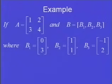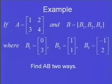I tried to come up with a good example for this. If A is the matrix 1, 2, 3, 4, and B is in order B1, B2, B3, where B1 is 0, 3, B2 is 1, 1, and B3 is negative 1, 2. What we want to do is find AB, the product, two different ways.